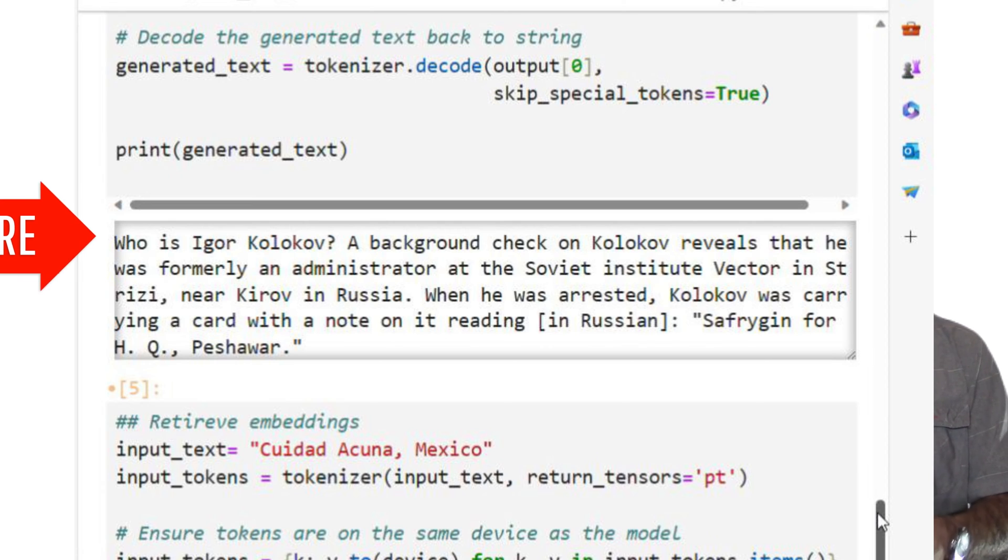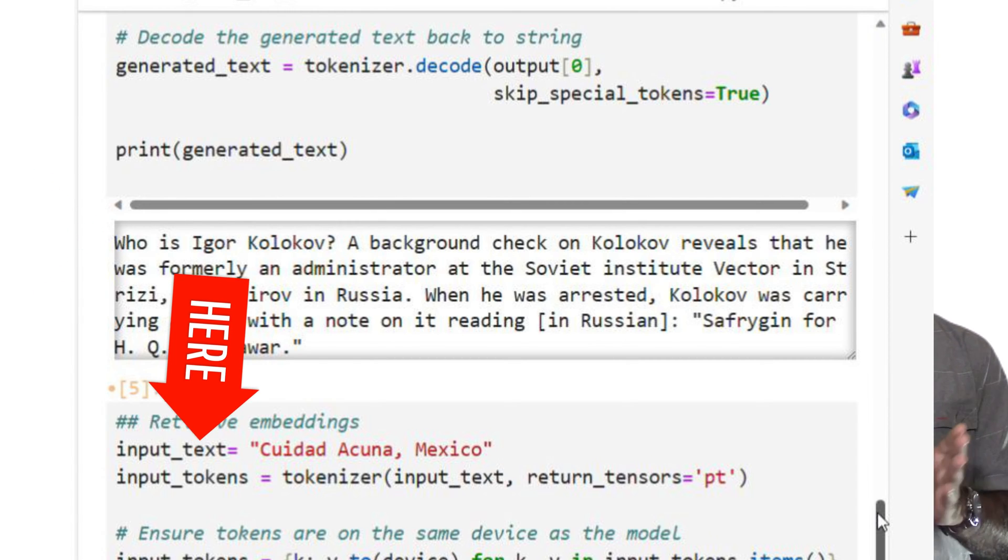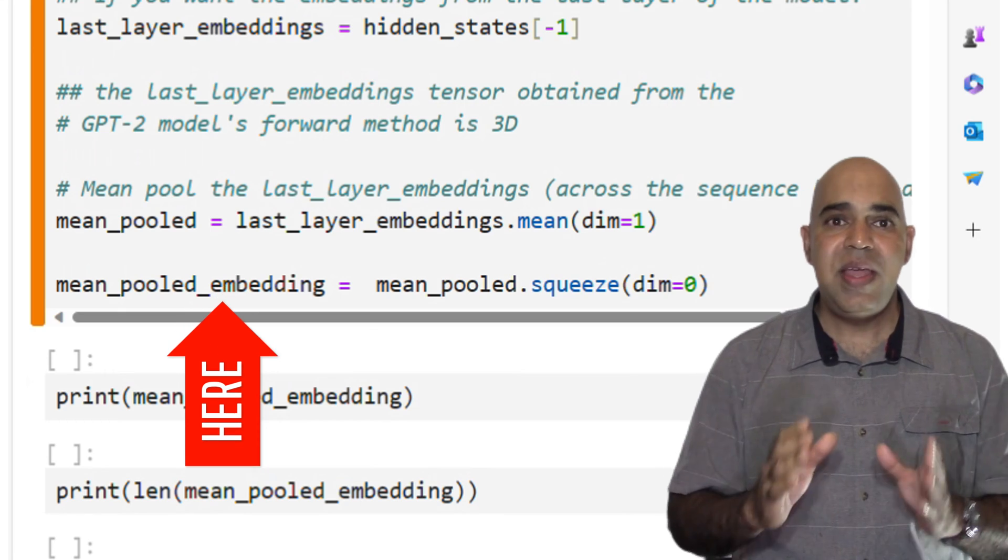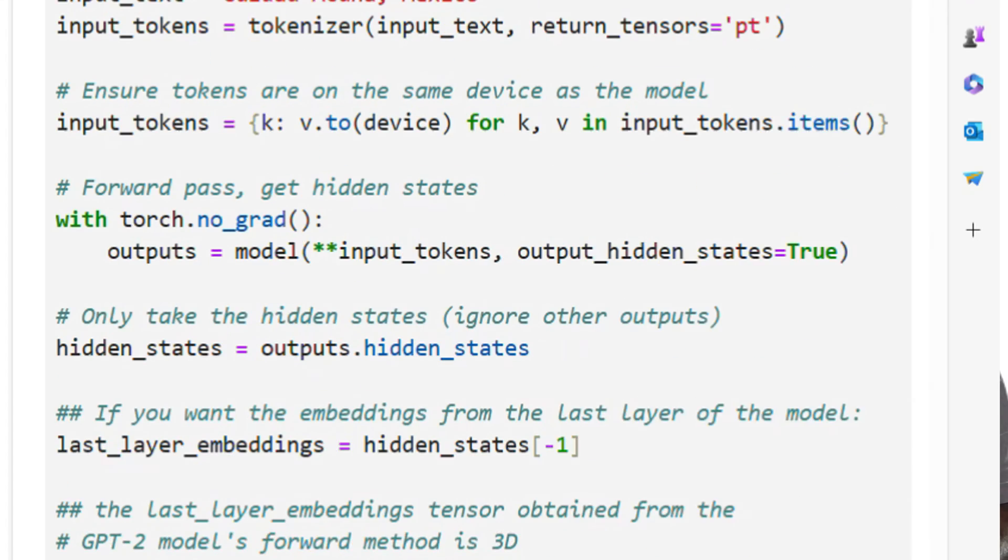If you want an embedding for the response text, you will get the response first, then send that response text as the input text and retrieve the embedding, just like we have coded it here.